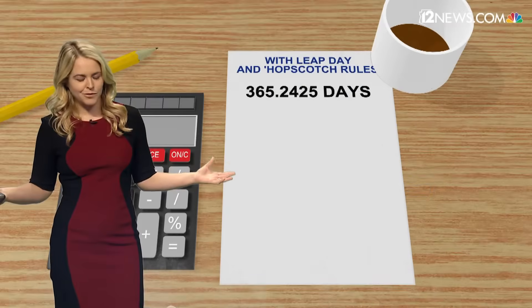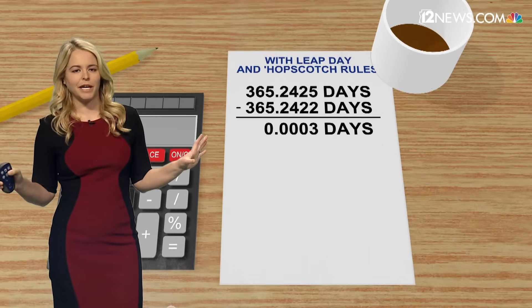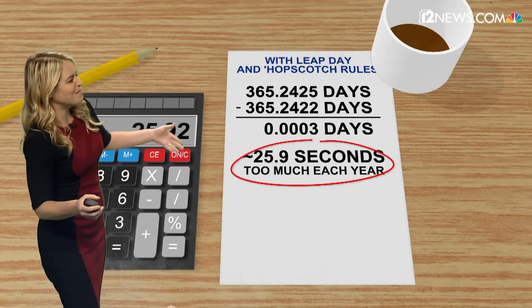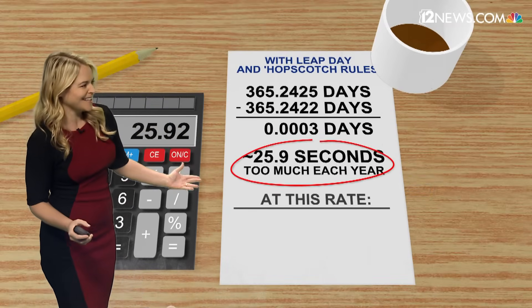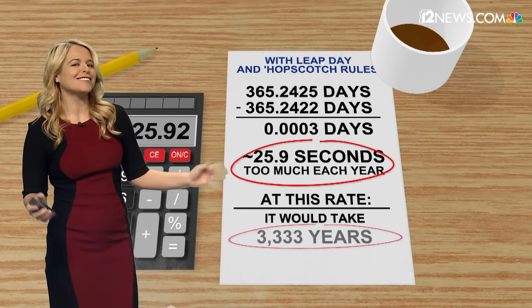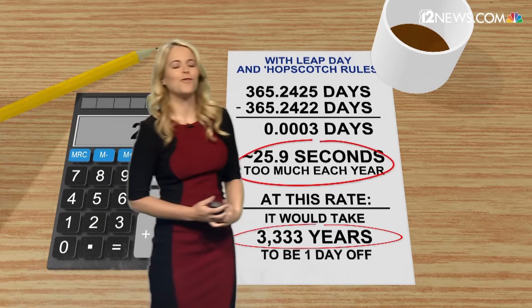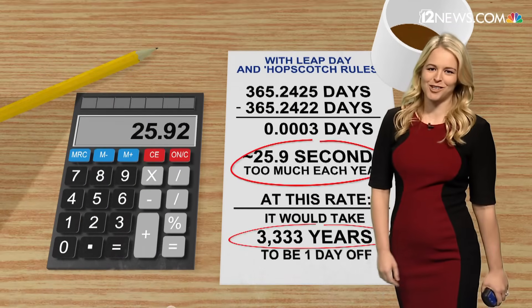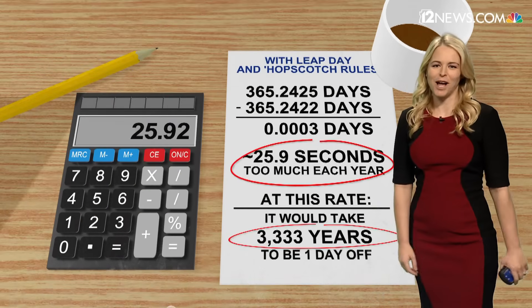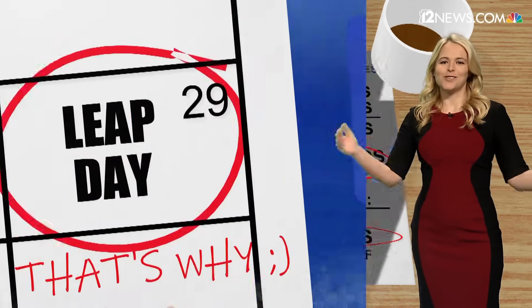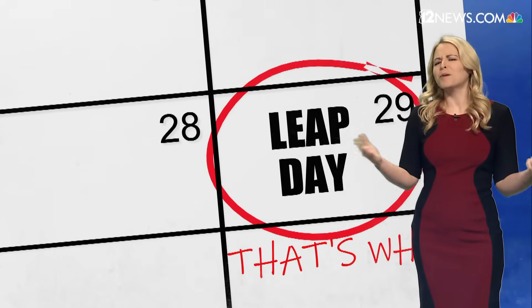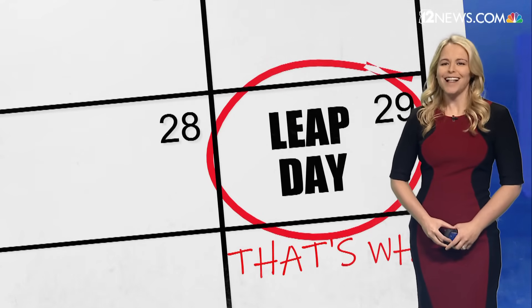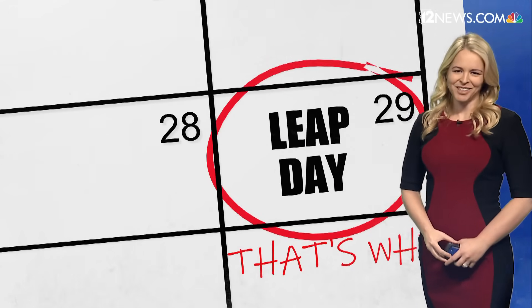Otherwise, we're still going to be way off. But with all of this in place, back to the calculations — it's going to take over 3,000 years for us to be off by one day. So that's why, for the most part, every four years we have a leap day.